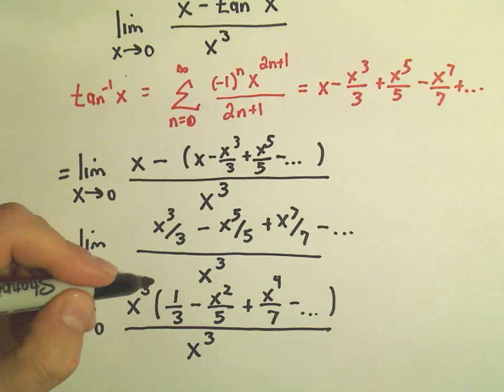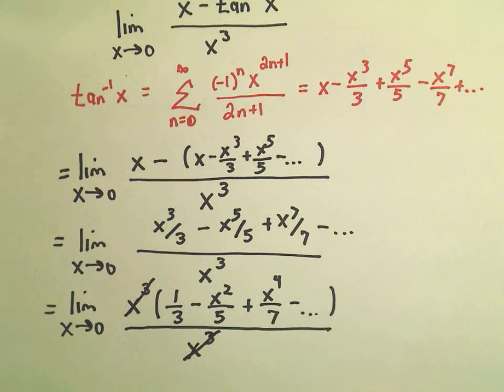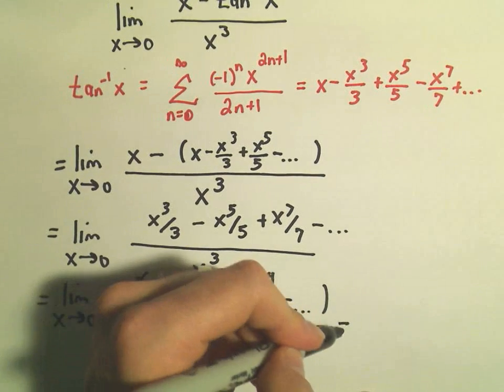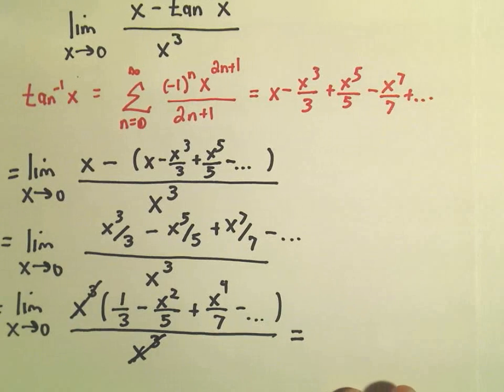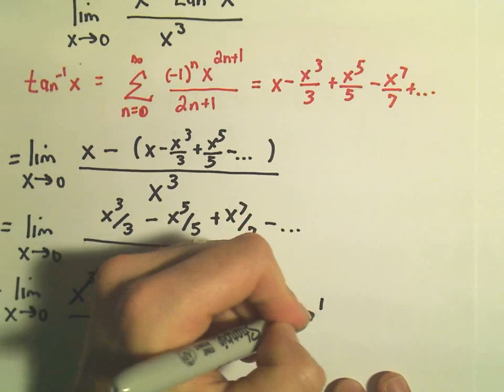And now we can just simply cancel out the x to the 3rd, x to the 3rd. And now we have no problems plugging in x equals 0. If we plug in x equals 0, now we'll get our answer. We'll simply be left with 1/3.